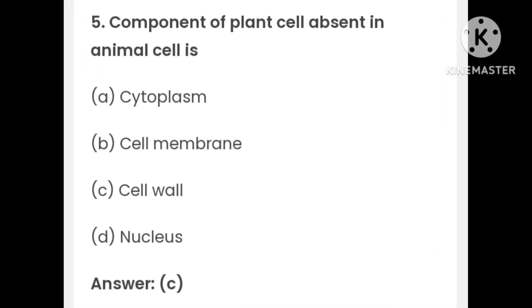The component of a plant cell that is absent in an animal cell: cytoplasm, cell membrane, cell wall, or nucleus. The answer is cell wall.